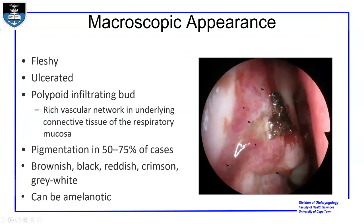The macroscopic appearance on endoscopy shows fleshy and ulcerated tumors. They are described as polypoid infiltrating lesions with a rich vascular network in the underlying connective tissue of the respiratory mucosa. About 50 to 75% will be pigmented, described as brownish, black, reddish, crimson, or grey-white. You can also get the amelanotic type, where there is no pigmentation.